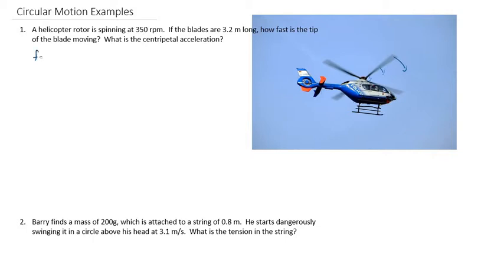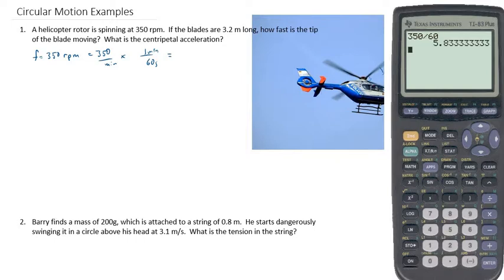So basically we're given that frequency is equal to 350 rpm. We're going to need to convert that probably. The rounds per minute just means that minutes is on the bottom. So we could have also written it as 350 per minute, which we're going to times by 1 minute having 60 seconds to see what the frequency is in seconds.